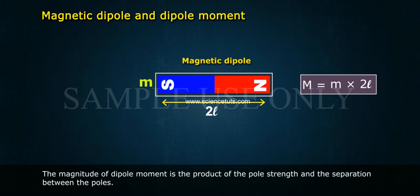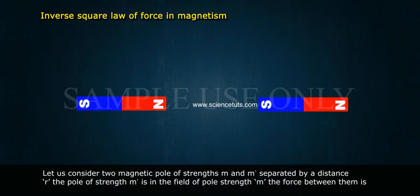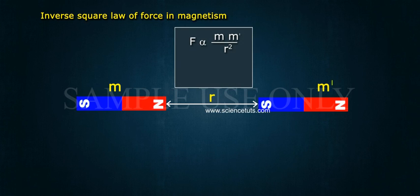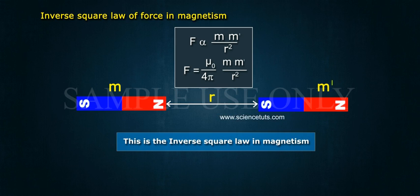The dipole moment is M = m × 2l. Inverse square law of force in magnetism: consider two magnetic poles of strength m and m' separated by a distance r. The force between them is directly proportional to m·m'/r². Therefore, F = (μ₀/4π) × (m·m'/r²). This is the inverse square law in magnetism.